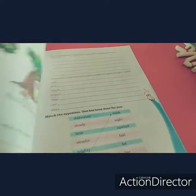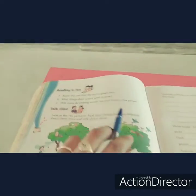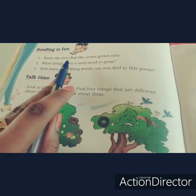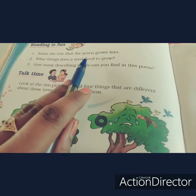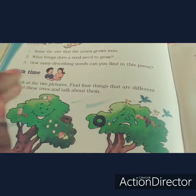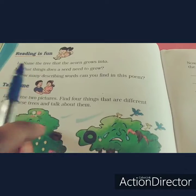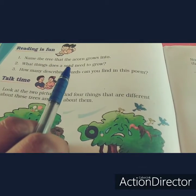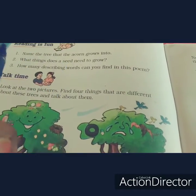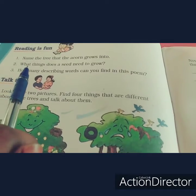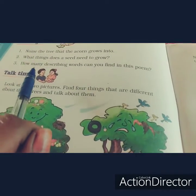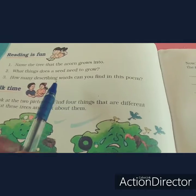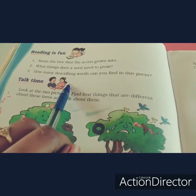Turn the next page. See the question and answer. Name the tree that the acorn grows into — it is the oak tree. What things does a seed need to grow? Air, water, and soil. How many describing words — describing words means adjectives — can you find in this poem? Mark the adjectives from this poem.